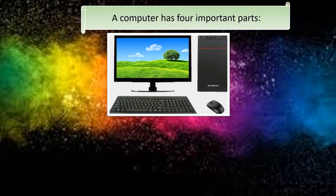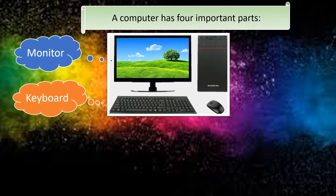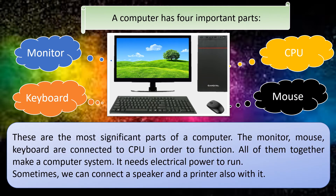A computer has four important parts: Monitor, Keyboard, CPU, and Mouse. These are the most significant parts of a computer. The monitor, mouse, and keyboard are connected to the CPU in order to function. All of them together make a computer system.